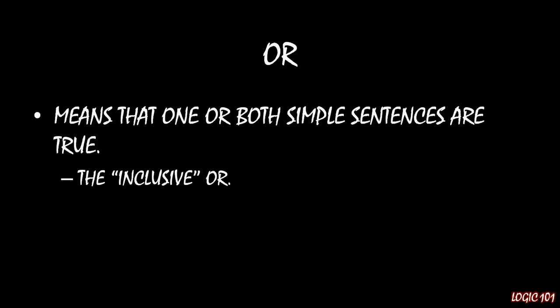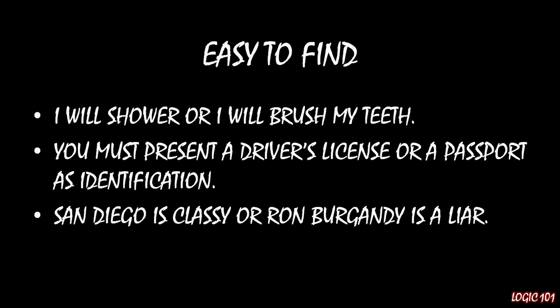These ORs are very easy to spot because they have OR in them. Here are three examples. First, 'I will shower or I will brush my teeth.' With the inclusive OR, that means I could be showering, brushing my teeth, or doing both at the same time — like Kramer from Seinfeld. In the second example, 'You must present a driver's license or a passport as identification,' meaning I could show my driver's license, my passport, or both — that wouldn't be a problem.